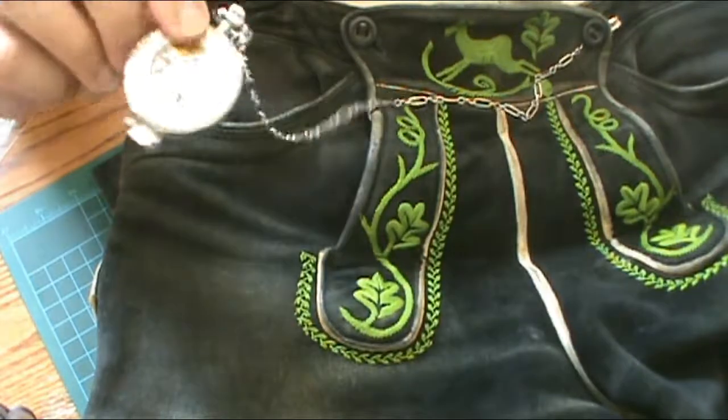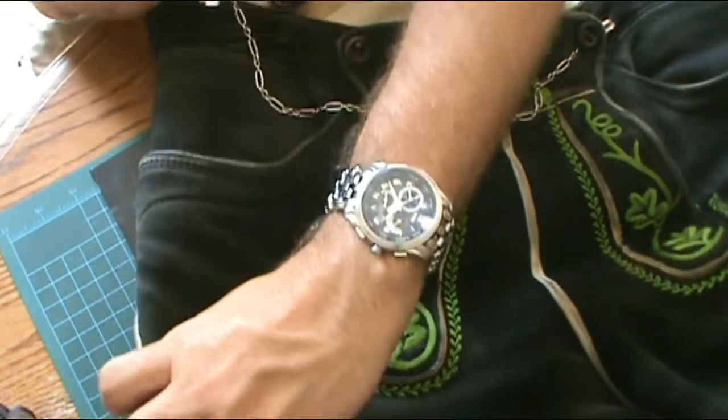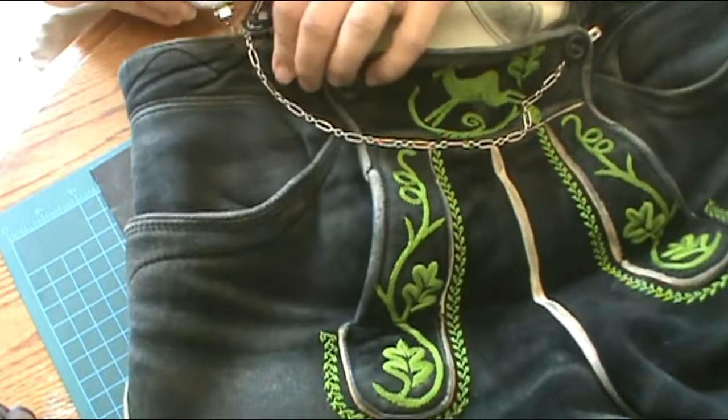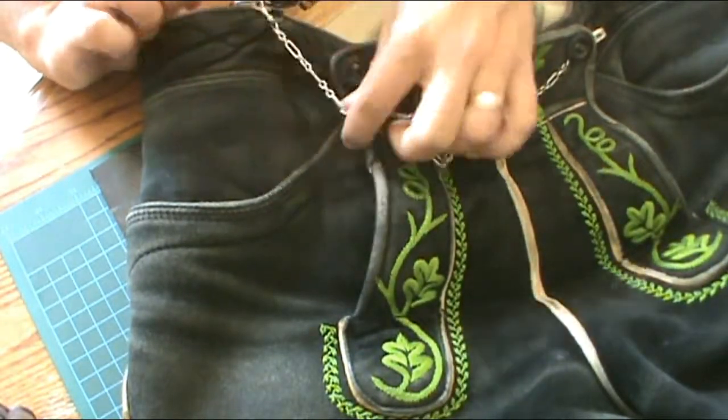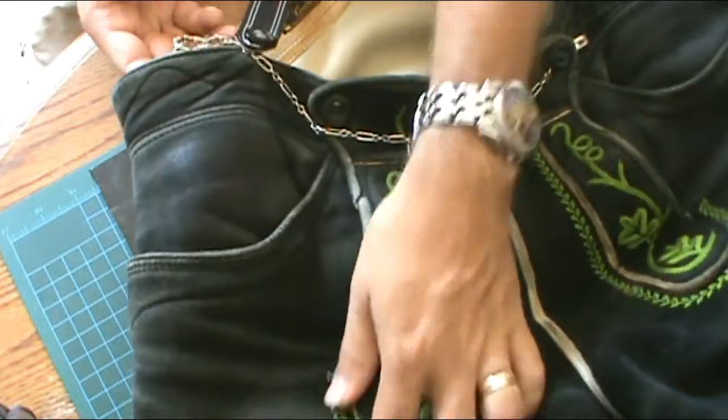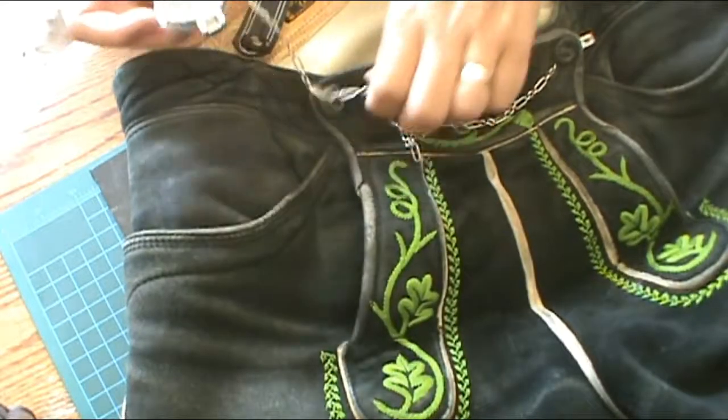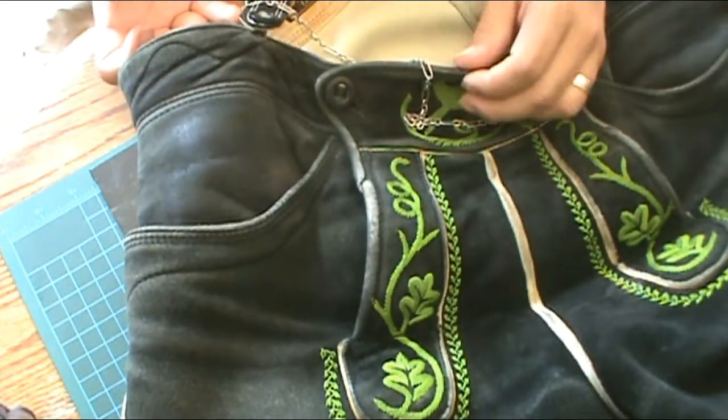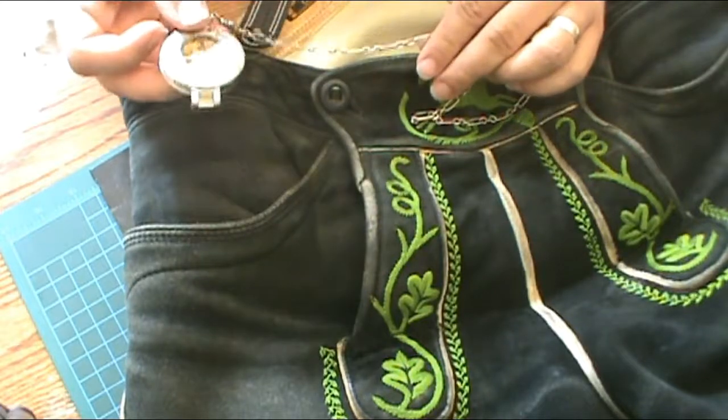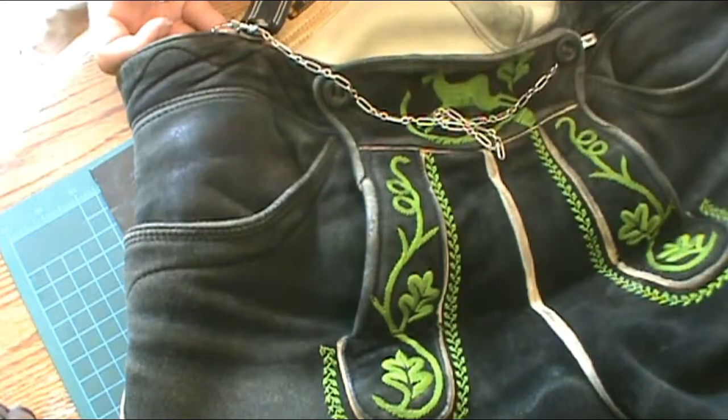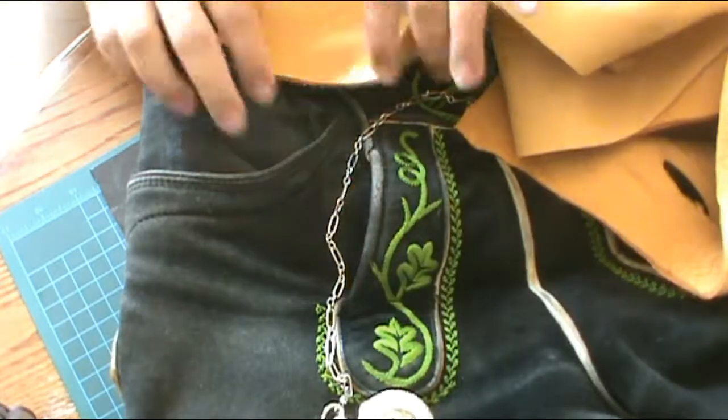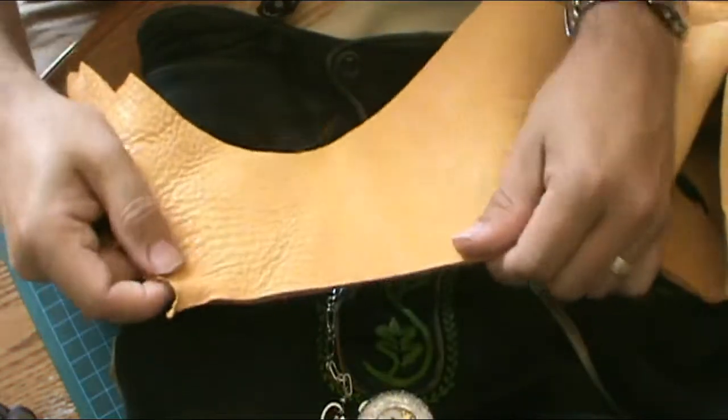A better place for the watch is actually tucked in right here behind the waistband. I don't know if you can see that, but that's what we're going to do. We're going to sew a pocket right here for the watch, and we're going to do that with some elk skin.